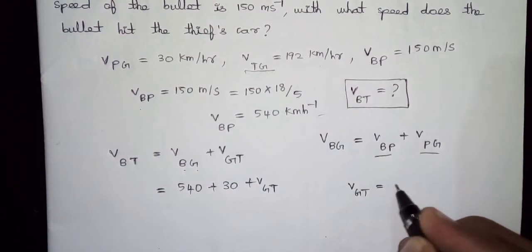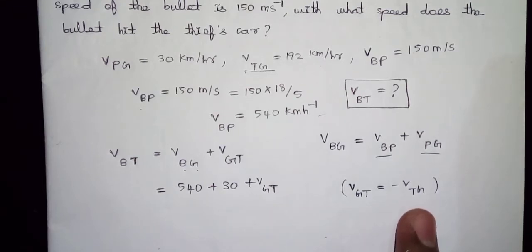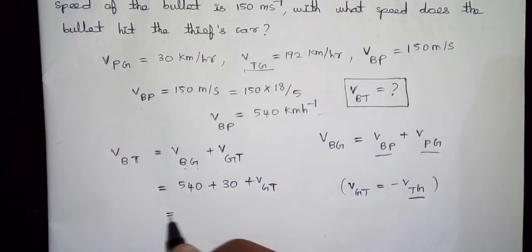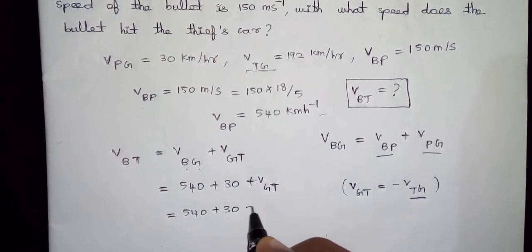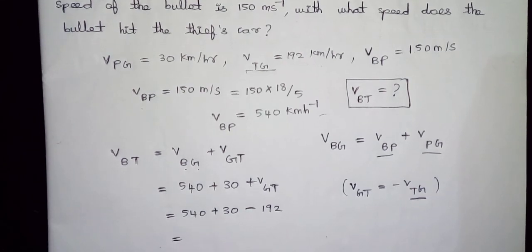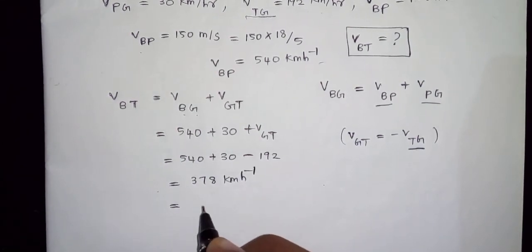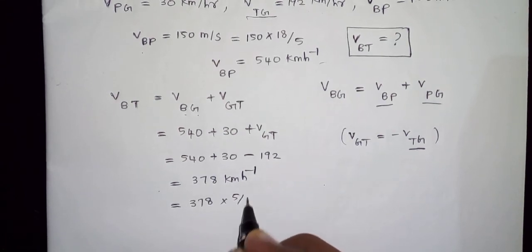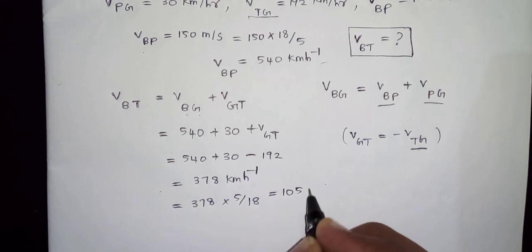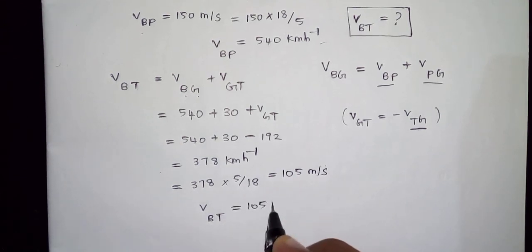V of GT is equal to minus V of TG. So V of BT equals 540 plus 30 minus V of TG, where V of TG is 192 km per hour. That gives us 378 km per hour. Converting to meters per second: 378 multiplied by 5 over 18 equals 105 meters per second. That is the velocity of the bullet with respect to the thief — 105 meters per second.